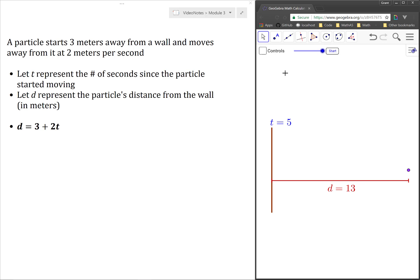Let's let t represent the number of seconds since the particle started moving, and we'll let d represent the particle's distance away from the wall in meters.